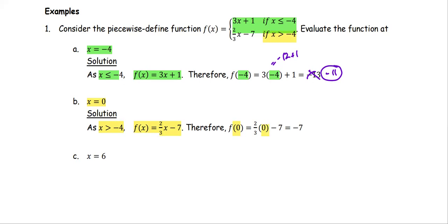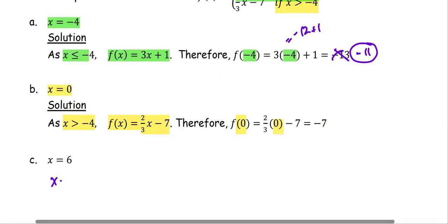For the case of x equals 6, x equals 6 is greater than negative 4. Therefore, the function will be defined as 2 over 3 times x minus 7. So f at 6 is 2 thirds multiplied by 6 minus 7. 3 and 6 reduce, so we have 2 times 2, which is 4 minus 7, or negative 3.